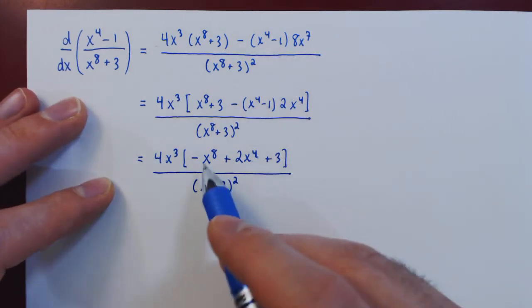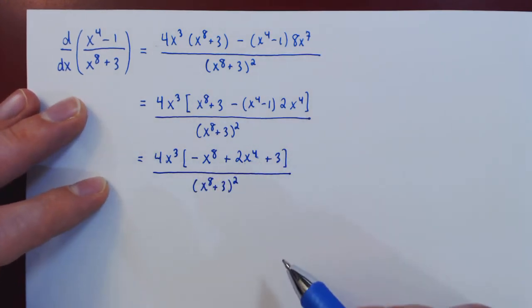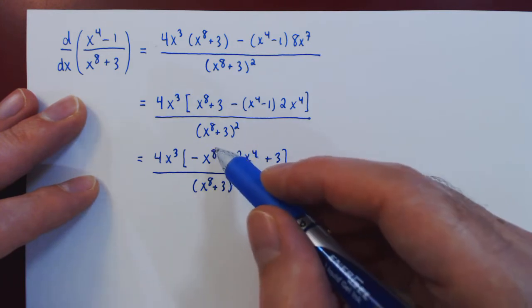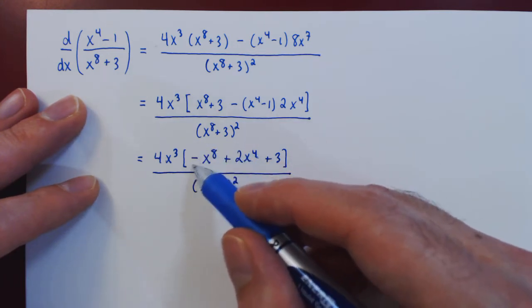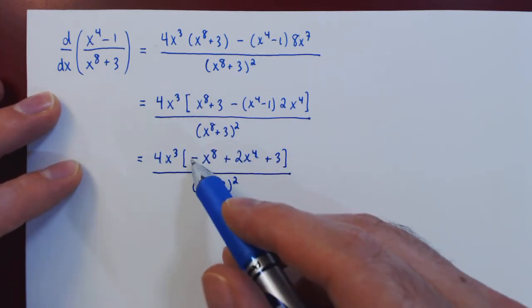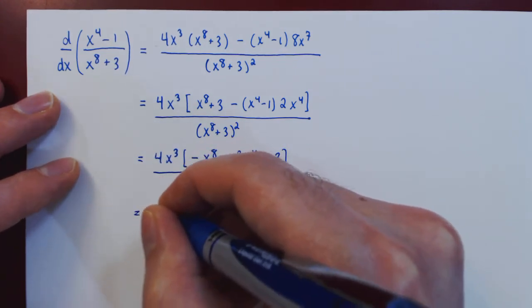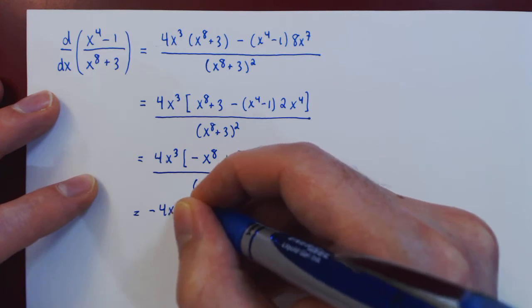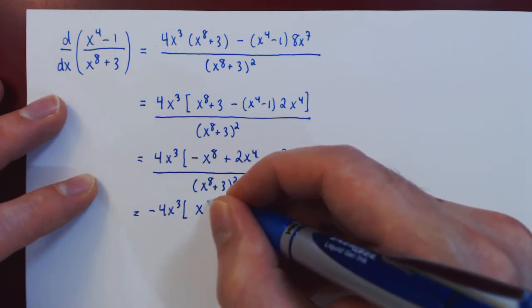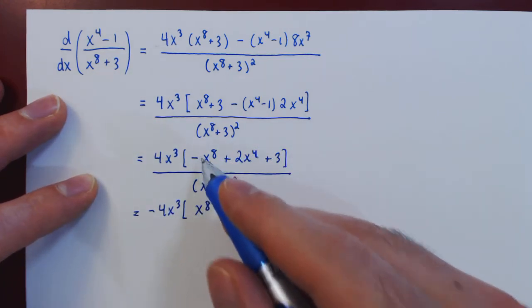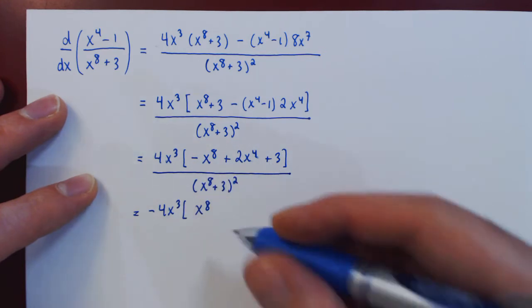Now let's see if we can factor this remaining polynomial. Before we do, it's always easier when we have the highest power with a positive coefficient, so let's factor from this a multiple of negative 1. This will give us positive x to the 8, but then negative 2x to the 4, negative 3.